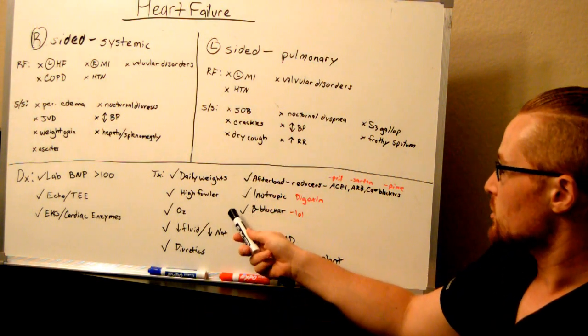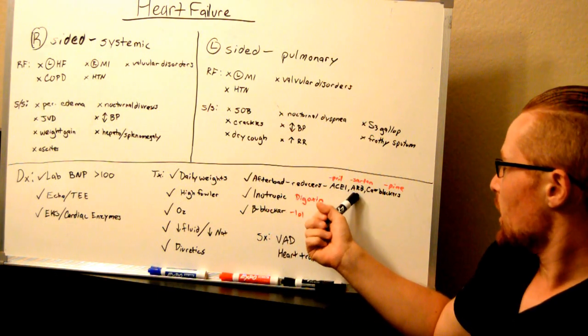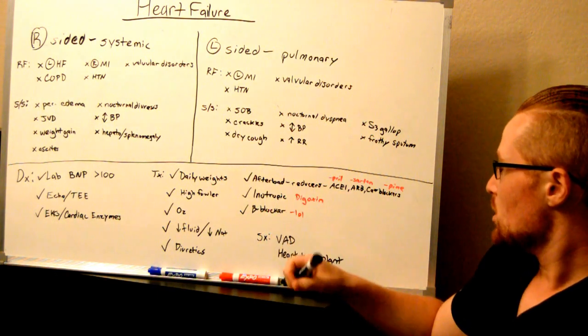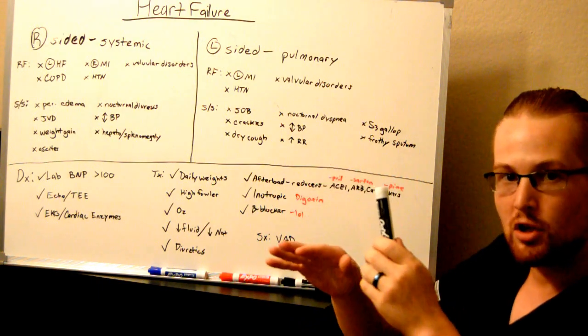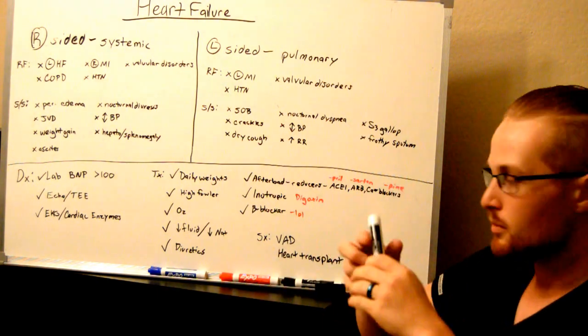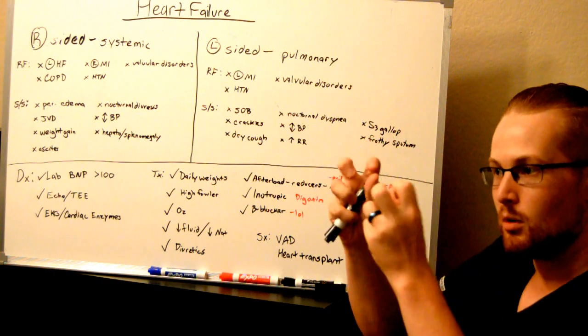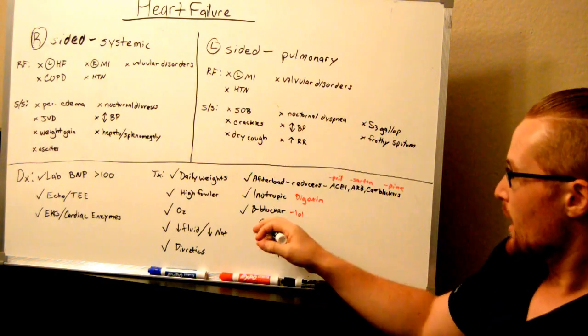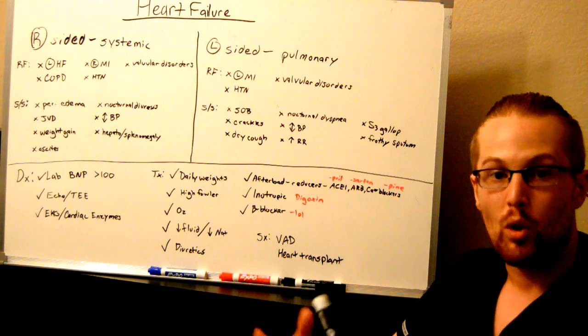And then there's three other medicines you can use. Afterload reducers such as ACE inhibitors, ARBs and calcium channel blockers will decrease the resistance to the blood pressure and help to allow the blood flow. Inotropics such as digoxin will help the heart to be more effective with each push. And beta blockers can also help the heart to work more effectively.